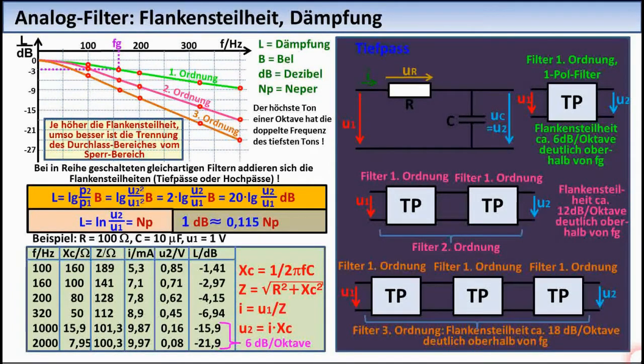While gains are often given as a factor by which the input signal is increased, attenuations are usually given in the unit Bel or decibel, where one decibel is the tenth part of a Bel.